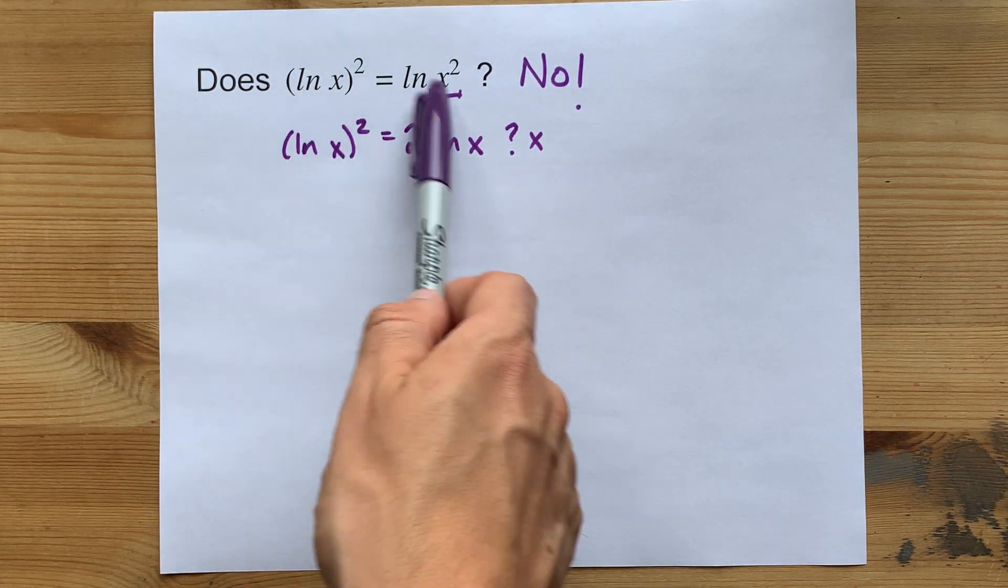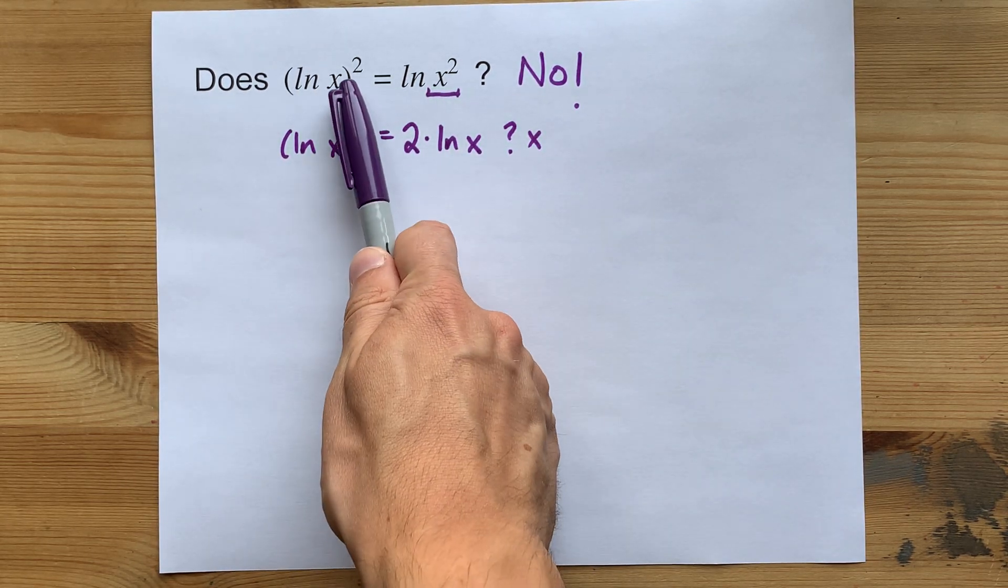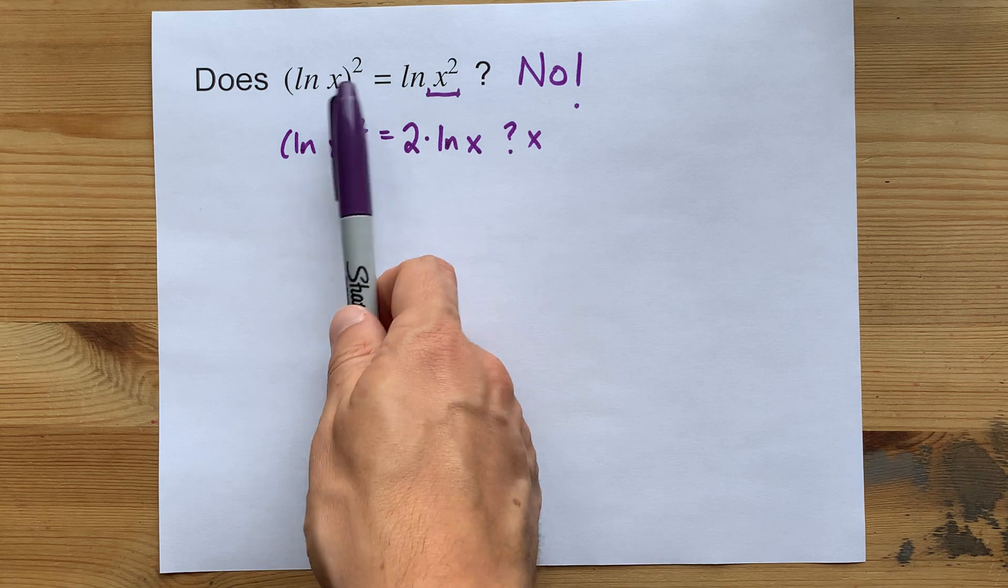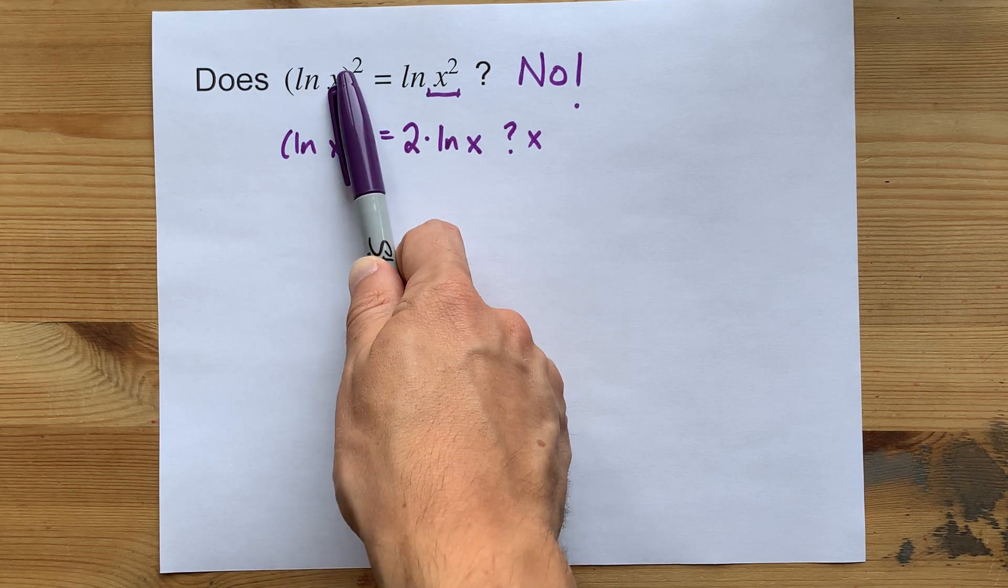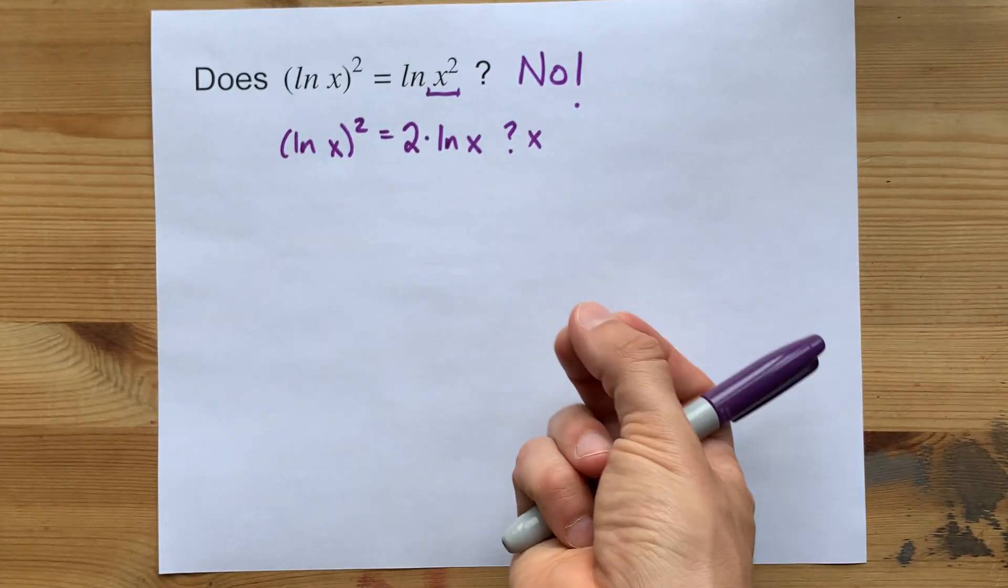The point is, no, these two are not the same. The brackets are very important here. Your logarithms and exponents, the order super, super matters.